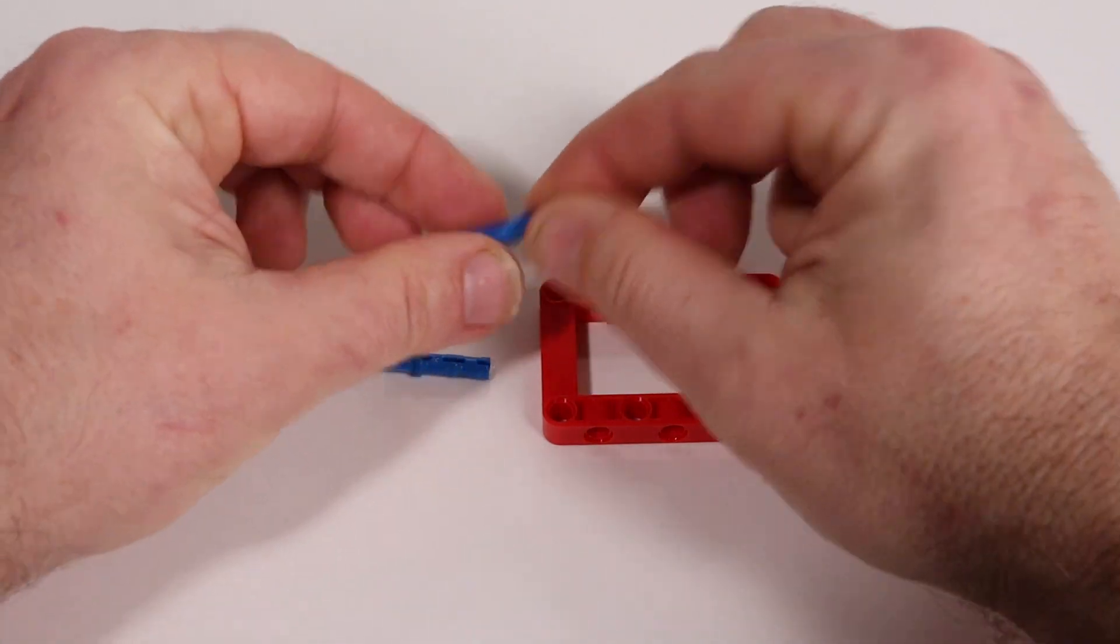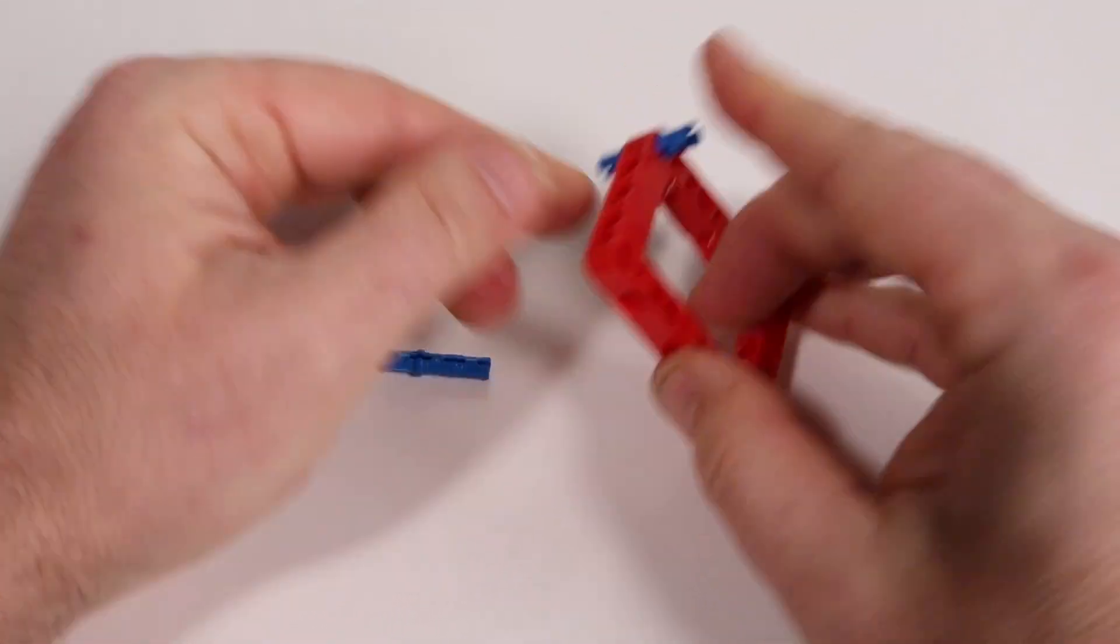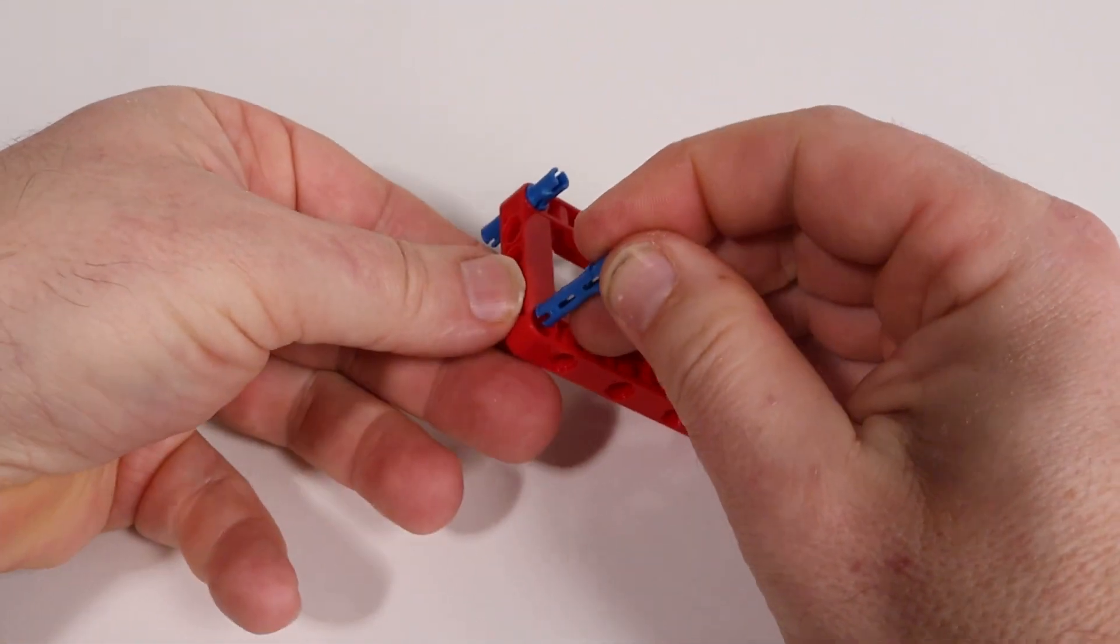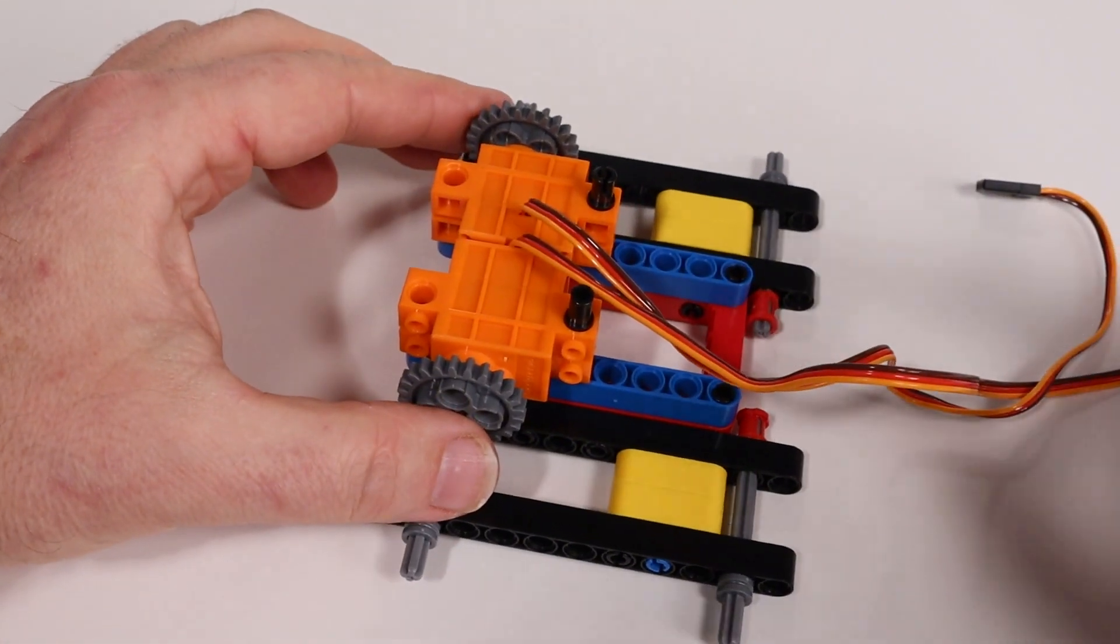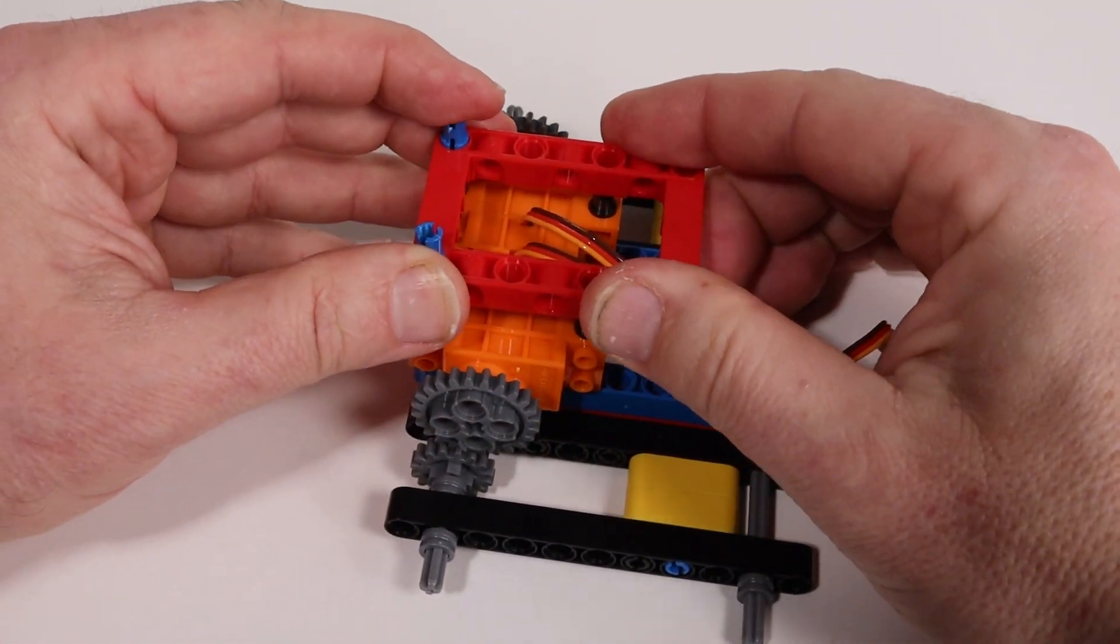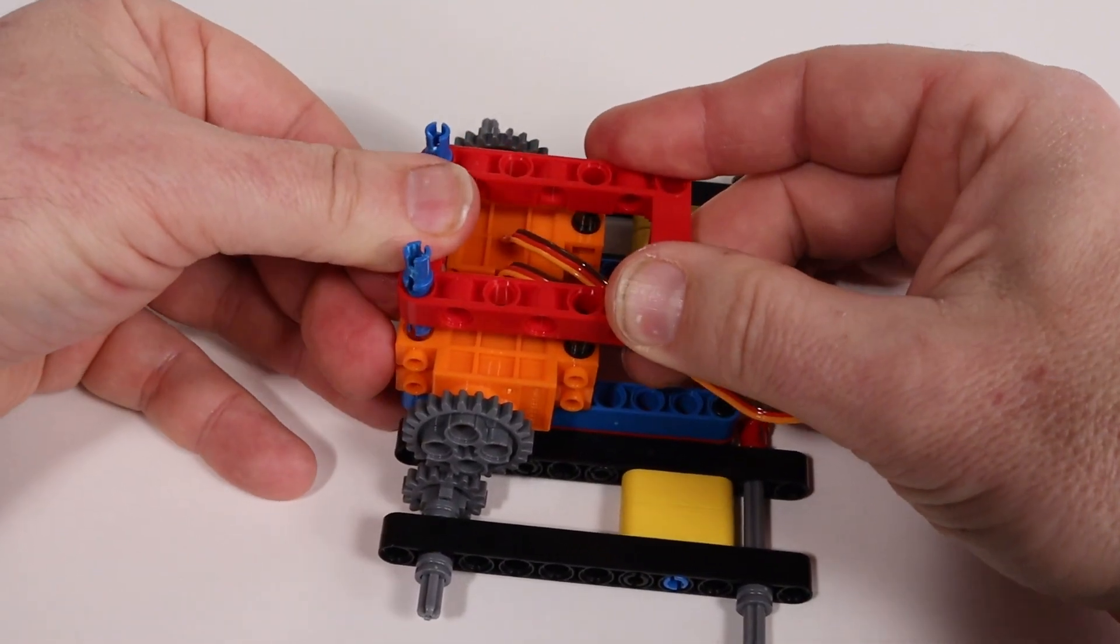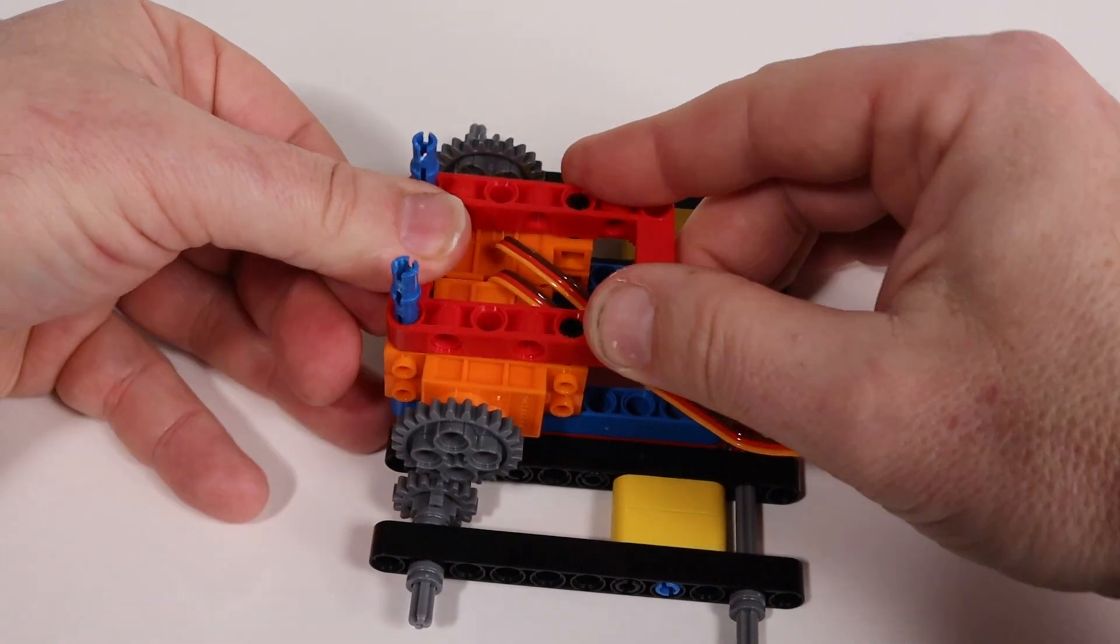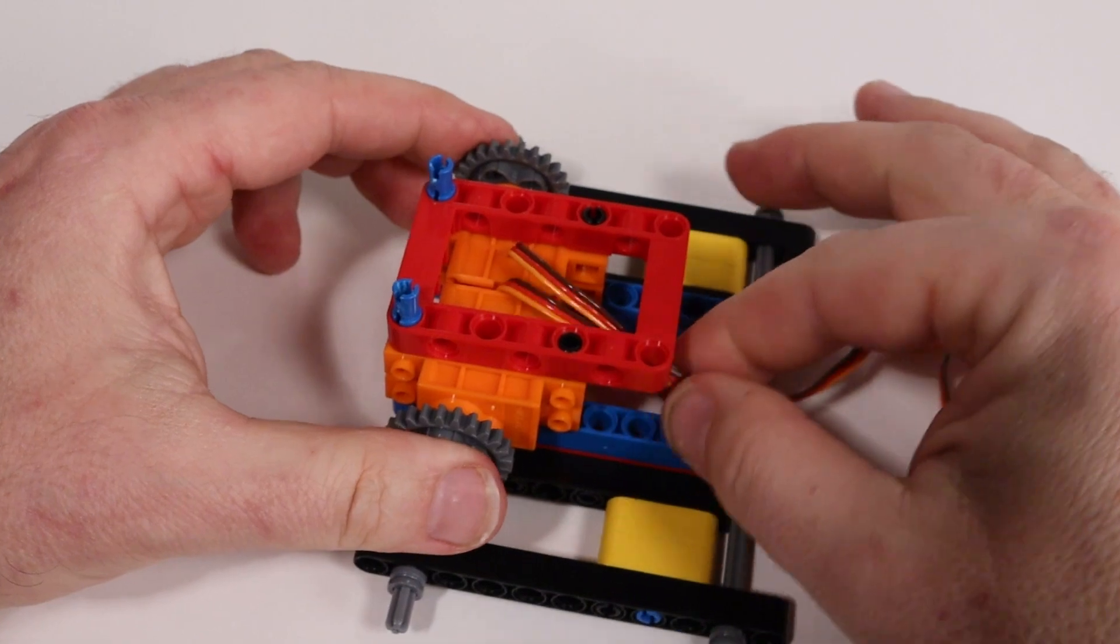Now we'll take the second red frame and insert blue pins into the front corners of the frame. Then we'll place the red frame directly down onto the servos. Try to push it down nice and straight as it's going into the black pins already on the servos as well as the front holes on the servos. If the blue pins pop up, that's okay. Just push them back down into place.